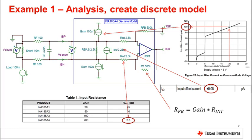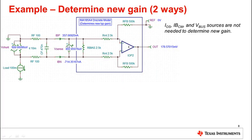The second and more important reason is it will be easier to determine the maximum gain error with the input filter. To determine the new gain, the model does not need the input offset current, common mode input bias current, nor the bus voltage sources. Removing these sources allows you to perform one DC simulation to determine the new gain without needing to consider offset errors. All that is needed is to divide the output voltage by the shunt voltage. After simplifying the circuit, we simulate the typical gain of 178.57 volts per volt, which is smaller than the device's inherent gain of 200 volts per volt. The overall circuit gain will always decrease when adding input resistors.